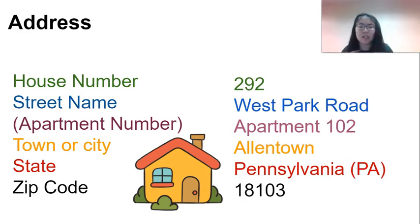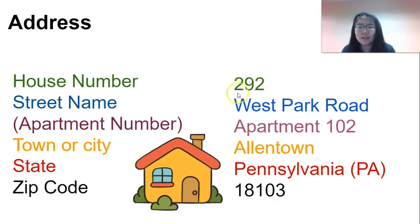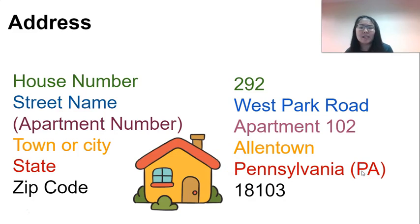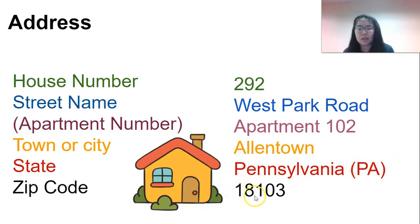For example, a made-up address: 292 West Park Road, Apartment 102. So the house number is 292, West Park Road is the street name, and Apartment 102 is the apartment number. The town or city is Allentown — let's pretend Allentown, Pennsylvania. Pennsylvania is a long state name; we could also just say PA — that is the state abbreviation. Allentown, PA 18103 — that's the zip code. That's how we would say our address.